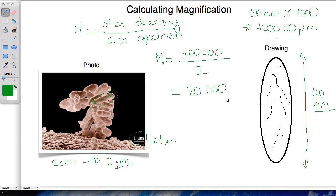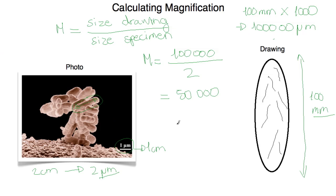We can also use this equation to calculate the size of the specimen. So let's say we have the size of the drawing, we've calculated that, and we have the magnification. But now we want to know what is the actual size of the specimen. So what we do is we take the size of the drawing divided by magnification, and that will give us the size of the specimen.